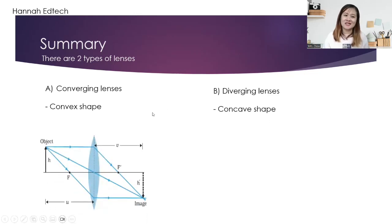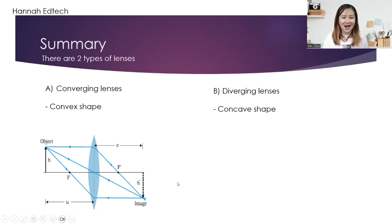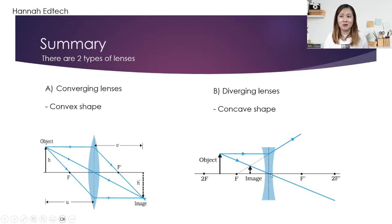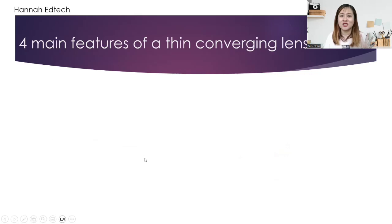Let me show you — this is how a converging lens looks like and how the rays will travel after they cross the lens. And this is a diverging lens, and you can see that the light rays diverge after they cross the lens. For our syllabus, we will be focusing more on the converging convex lens, and there are four main features of a thin converging lens.